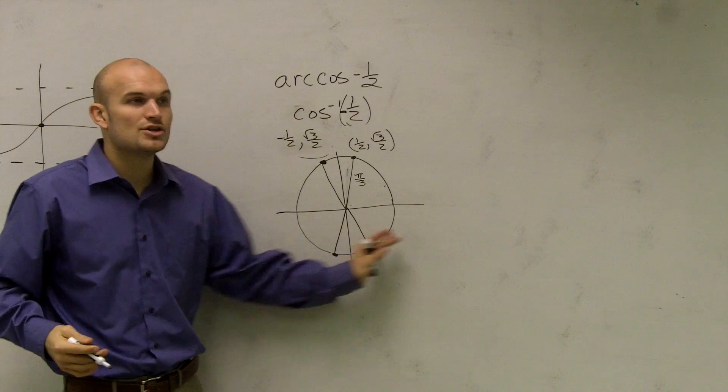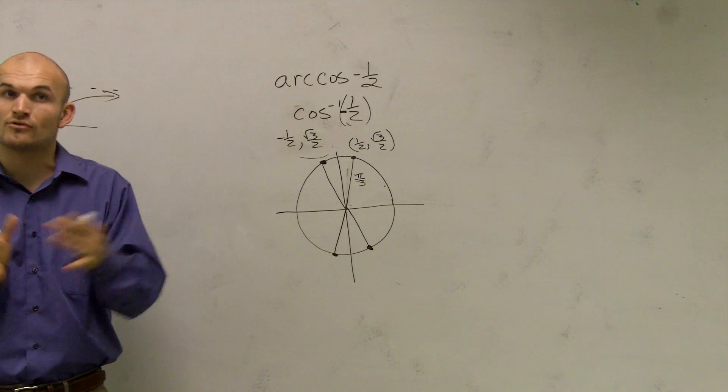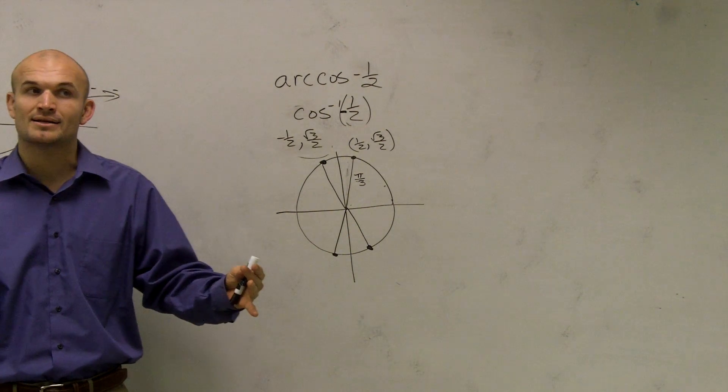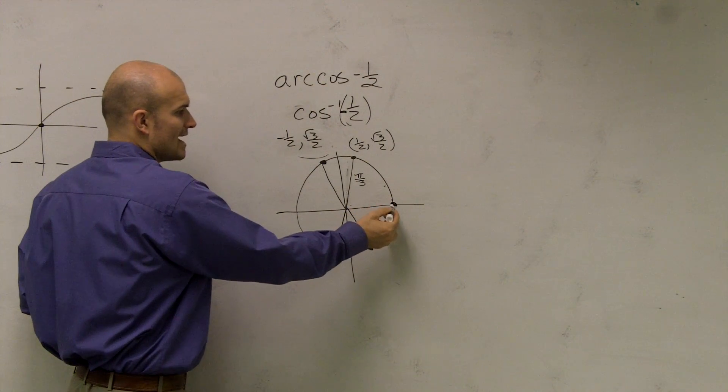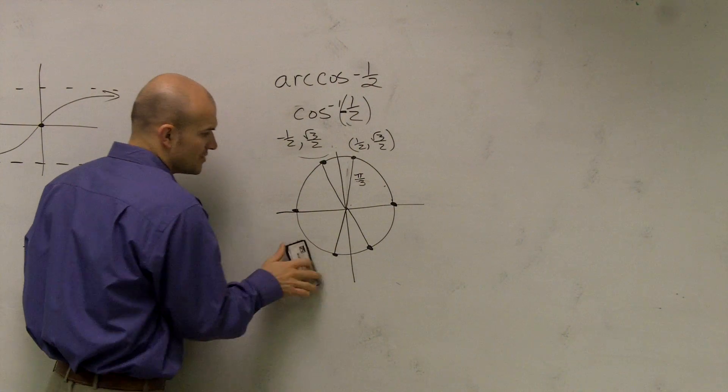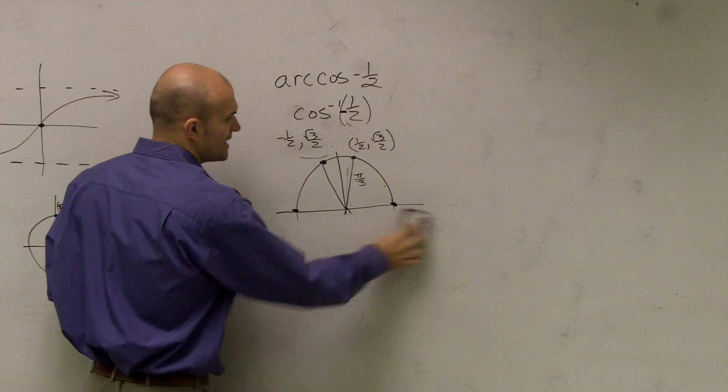However, we... I know that I'm not going to use those points because I remember the range, right, where my restrictions on the inverse cosine is between 0 and pi. So that my point, my angle has to be between 0 and pi. So, therefore, I don't even need to worry about those angles below.